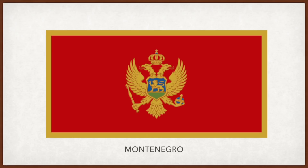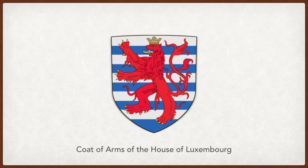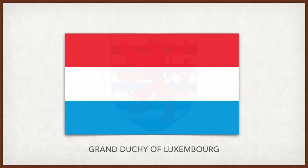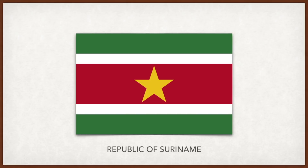Suriname: the green is for the country's jungles and agriculture, white is for justice and freedom, and red is for the progressive spirit of the nation; in the center a yellow star symbolizes unity, a golden future, and the spirit of sacrifice necessary to achieve those goals. Cape Verde: the ten yellow stars represent the ten main islands; the white, red, and white stripes represent peace and the path toward nation building.